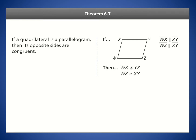Let's take a look at the first theorem, Theorem 6-7: if a quadrilateral is a parallelogram, then its opposite sides are congruent. Remember that what makes a parallelogram a parallelogram is that you have two pairs of opposite sides that are parallel. So those two opposite sides are parallel and these two opposite sides are parallel. That means the opposite sides have to be congruent — this side is congruent to that one, and that side is congruent to that one.